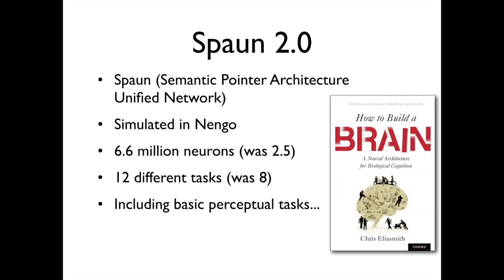Next I'll talk about Spaun — one of our more famous models. I'll talk about Spaun 2.0. The first version was published in Science in 2012 and then was chapter seven of the book How to Build a Brain in 2013. Since then we've done a bunch of work on it. The first version was about 2.5 million neurons, and now it's up to about 6.6 million neurons with around 20 billion effective connections. We like to call it the world's largest functional brain model, which I think is still an accurate description.